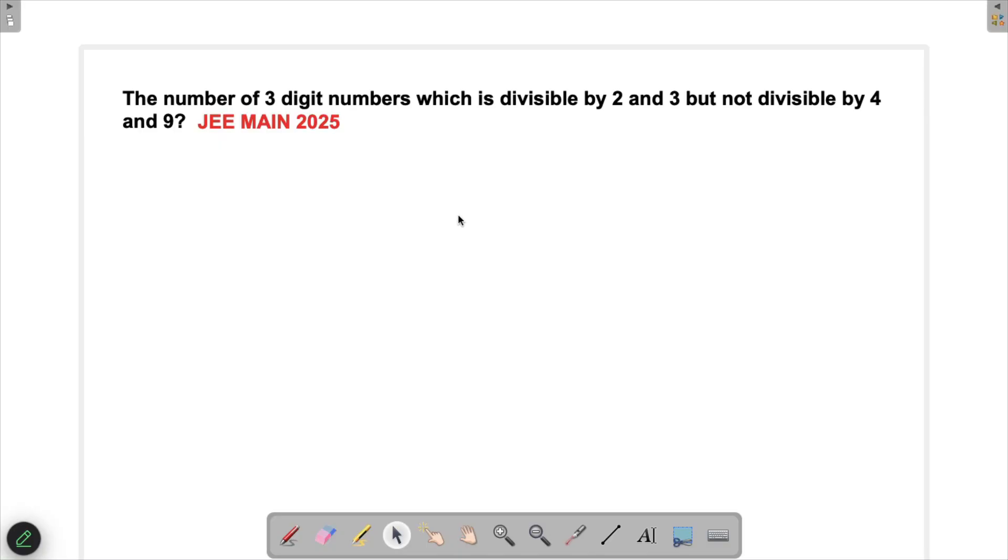Let's solve a problem which appeared in JEE MAIN 2025. In this question we have been asked to find all three-digit numbers which are divisible by 2 and 3 but not divisible by 4 and 9. This is a keyword actually - we have to look at 2 and 3 and not divisible by 4 and 9.